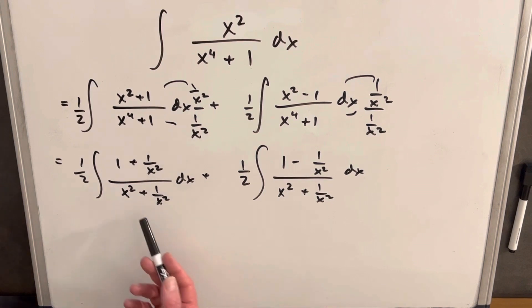What I want to do is rewrite this numerator in a way that I can do a u substitution, and then we can integrate this thing. So let's see how that's going to look.